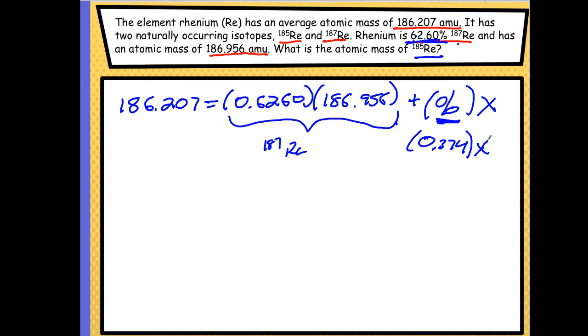So I actually know the percentage of this other isotope by simply subtracting the percentage of the first isotope from 100, because both of these have to equal 100% for that to work.